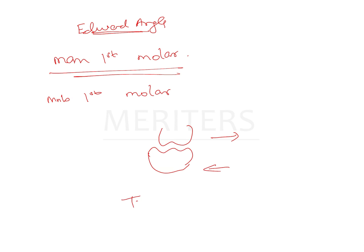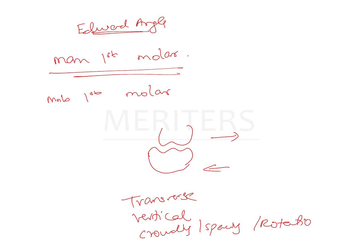Angle did not consider malocclusions in any other planes of space, for example in the transverse plane or in the vertical plane. He also did not consider any intra-arch and inter-arch discrepancies such as crowding, spacing, rotations, open bites, or deep bites. All of this was not included in Angle's classification.